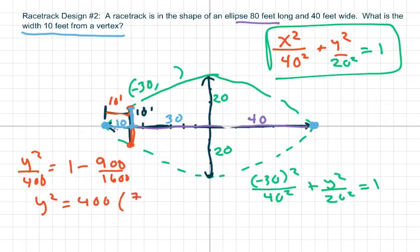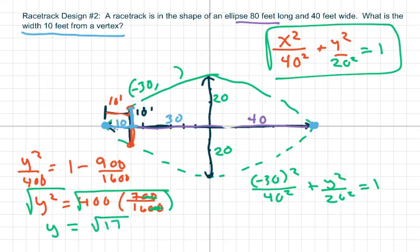And this is 700 over 1600, which basically you can take the two zeros out before you put in the calculator. 7 over 16. Take the square root of both sides. So y is square root of 175, which equals 5 square root of 7.